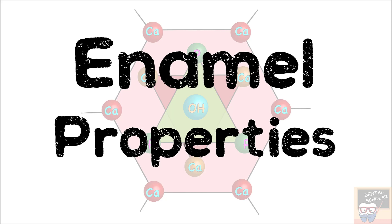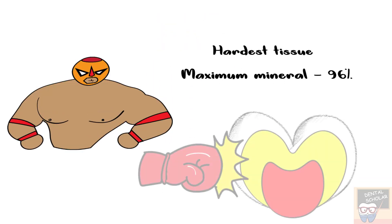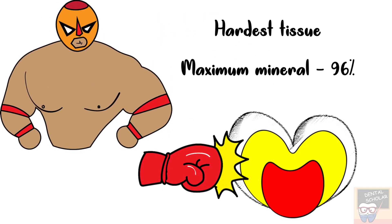Enamel simply means a protective layer. It protects the underlying dentine. It is the hardest tissue in human body and this is because it has maximum mineral content of any mineralized tissue and it is about 96%.